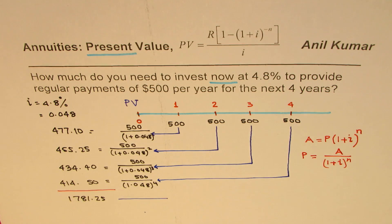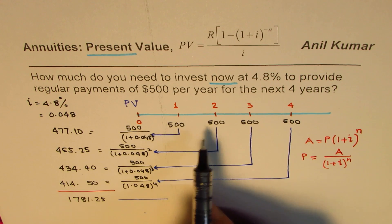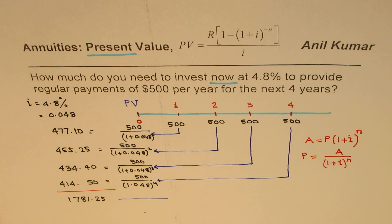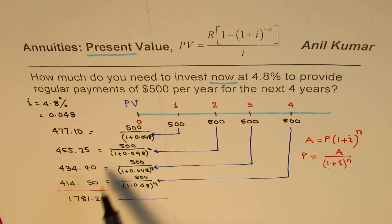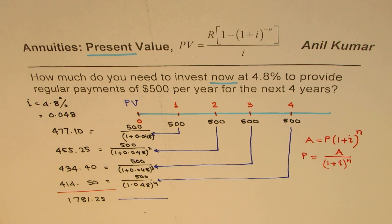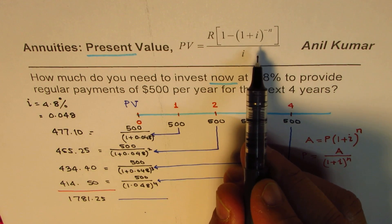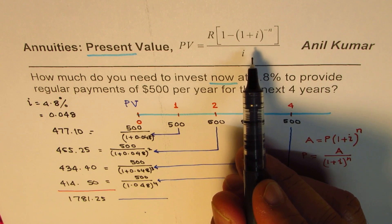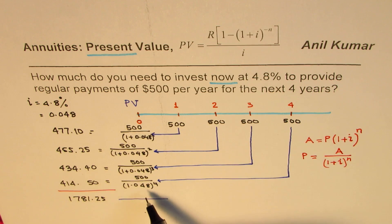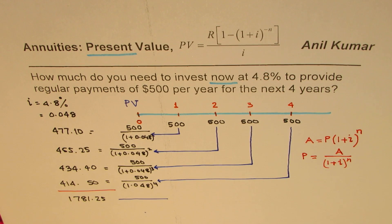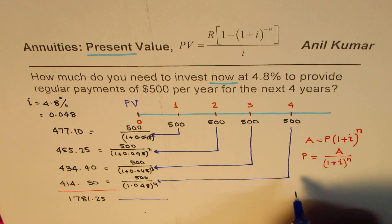So $1,781.25 is the total amount we invest now, and in return we get $500 each year for the next four years. You can actually plan this for something like a study loan — when you invest this much, you get enough money to pay off tuition, for example. Another way to calculate this is to use the formula directly — a combination of what we did with the geometric series formula.